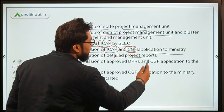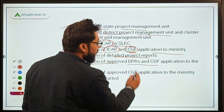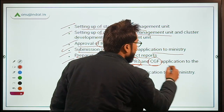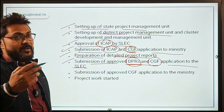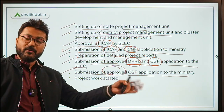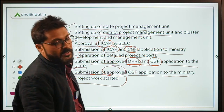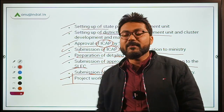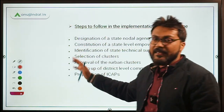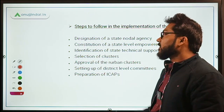After submission, detailed project reports (DPRs) are prepared. These approved DPRs and the critical gap funding application are submitted to the State Level Empowered Committee, which then submits the approved CGF application to the Ministry of Rural Development. Finally, project work begins.